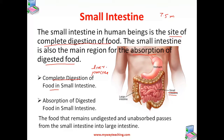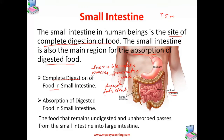The liver secretes bile juice, while the pancreas secretes pancreatic juice. Bile juice plays an important role in the digestion of fats. The pancreatic juice digests fats, leftover starch, and any leftover proteins in the food.